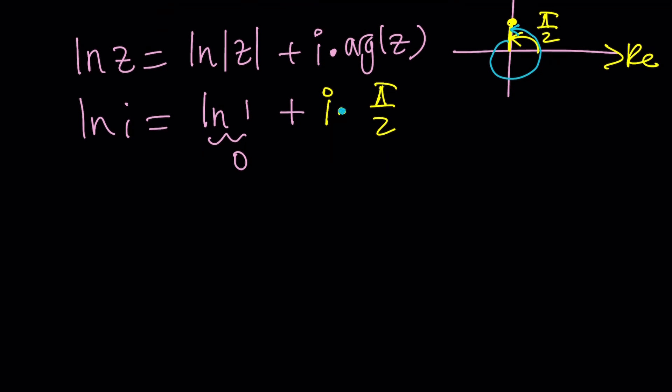So, in other words, we can write this in general by adding a 2πn to the principal argument, and that's going to give us all possible values if n is an integer. Make sense? Great.